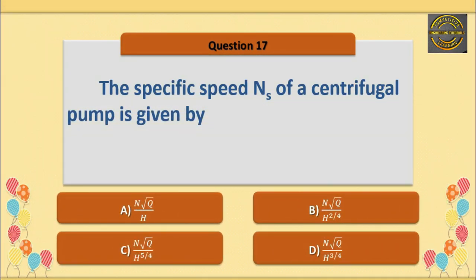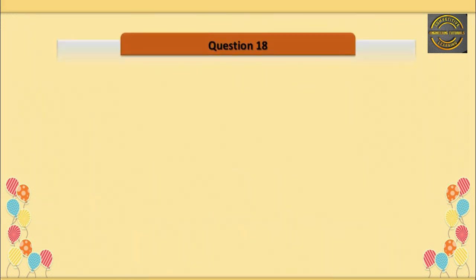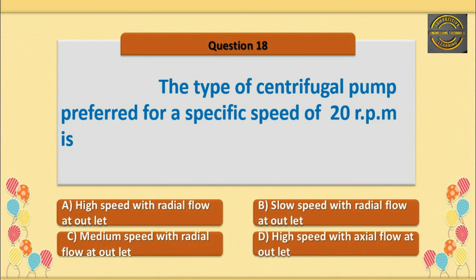Q17. The specific speed N_s of a centrifugal pump is given by — option D is correct — N√Q divided by H to the power 3/4. Q18. The type of centrifugal pump preferred for a specific speed of 20 rpm is — option B is correct — slow speed with radial flow at outlet.